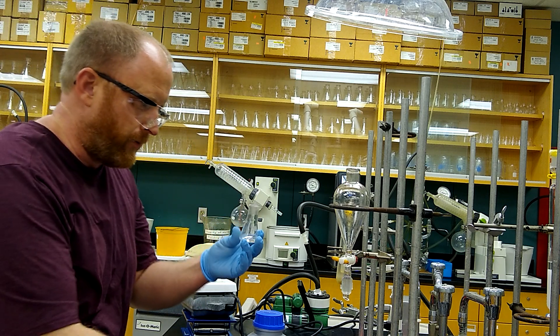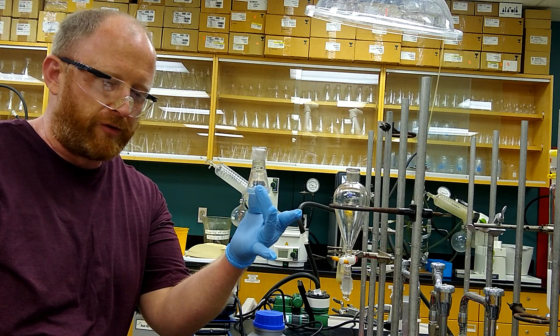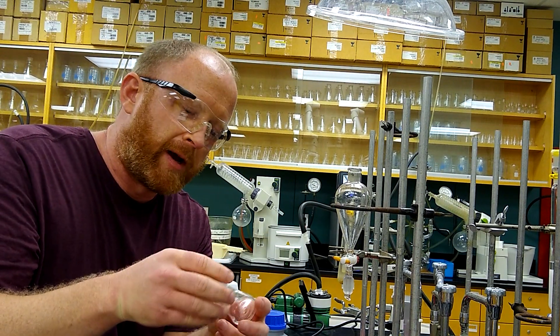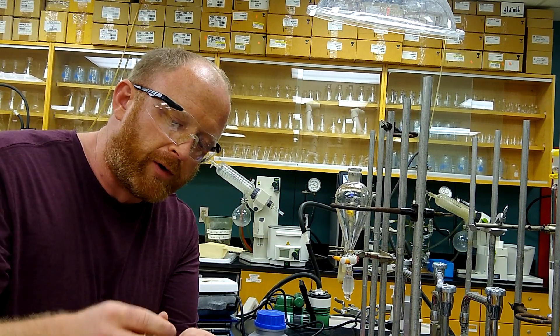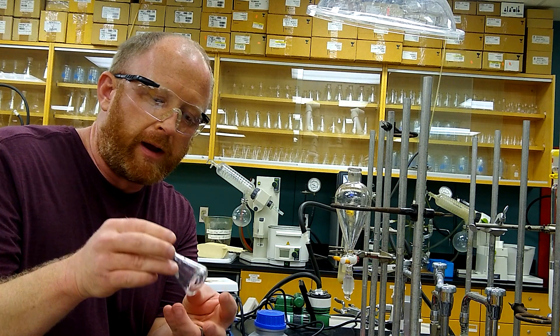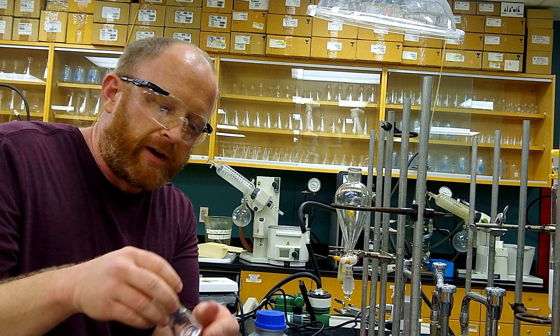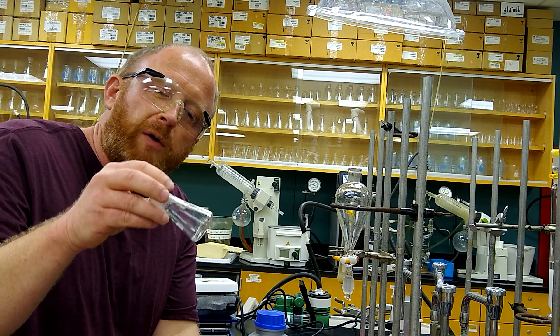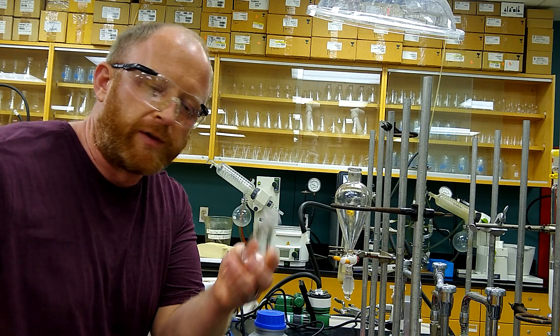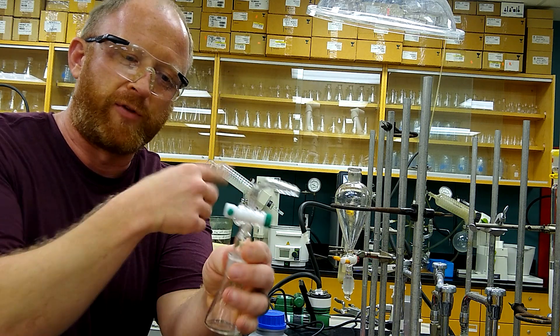Now we're just going to evaporate this down to dryness on the rotavap. After the rotavap, because ether boils at about 35 Celsius and the bromopropane that might have been in the ether along with your product boils at about 71, most of that should have come off on the rotavap. Just to be safe, we're going to put this on the vacuum pump with this little vacuum adapter, so we just hook it up to the vacuum pump and open it up to the vacuum.